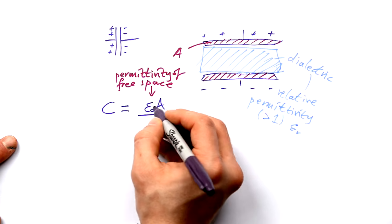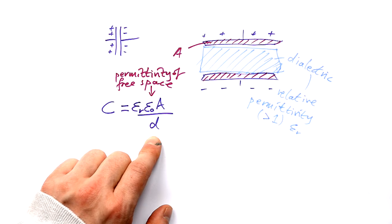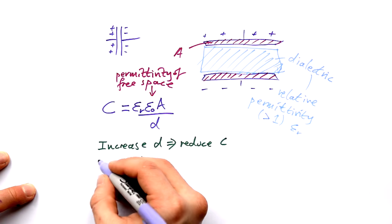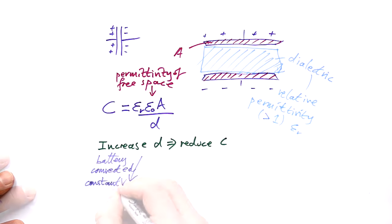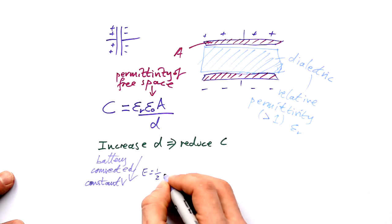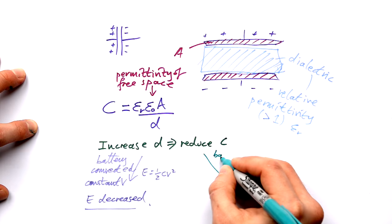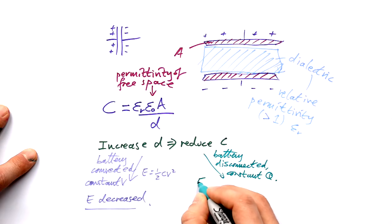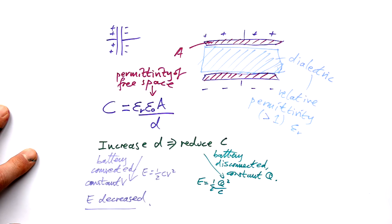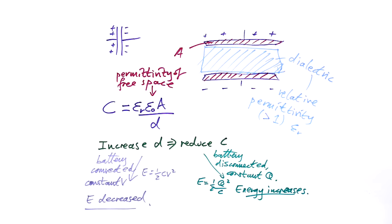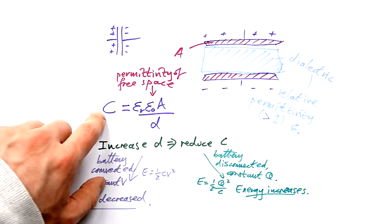Including relative permittivity, the capacitance formula becomes C = ε₀εᵣA/d. If you charge a capacitor and then increase the plate separation, the capacitance decreases. If the battery is still connected, PD stays constant, so from E = ½CV² the energy decreases. If the battery is disconnected, the charge stays constant; using E = Q²/2C, as C decreases the energy actually increases — which makes sense, because you're doing work to pull two attracted plates apart, so you're adding energy to the system. Changing the dielectric has the same effect on capacitance.